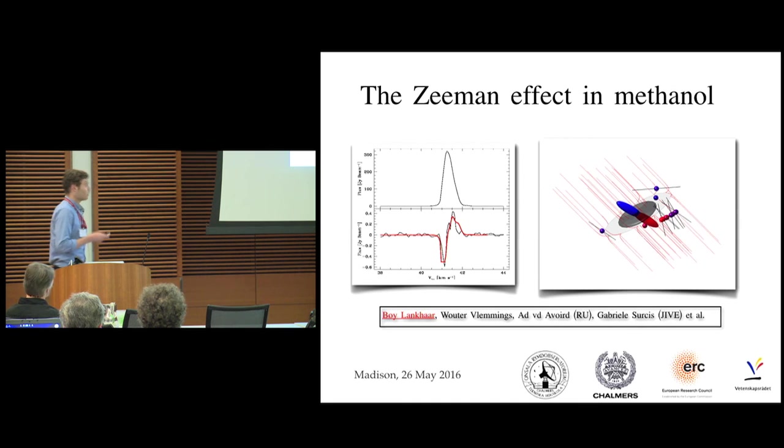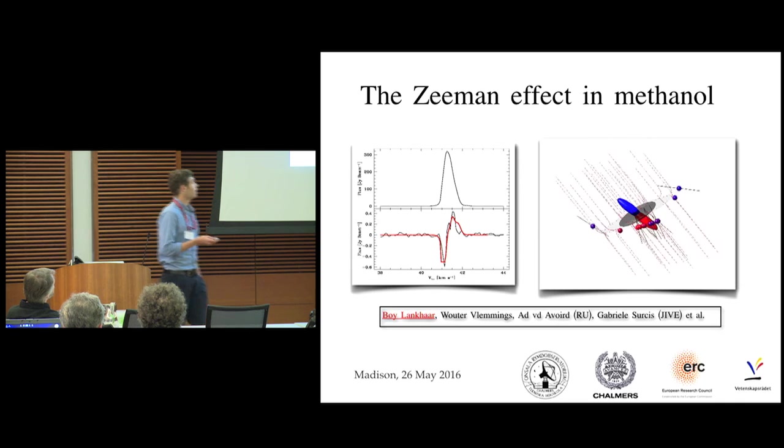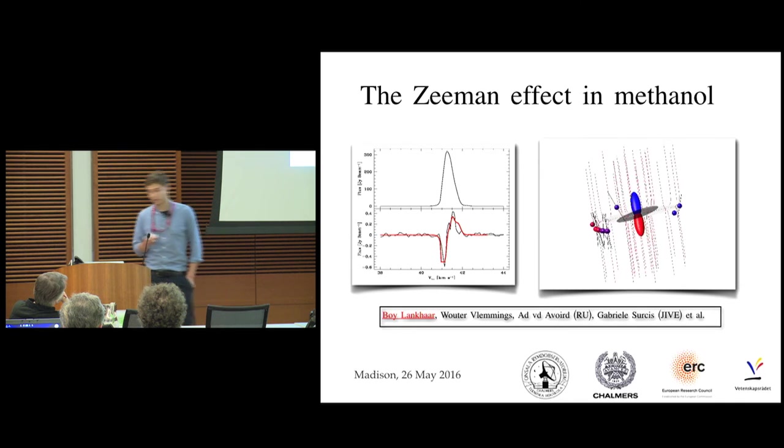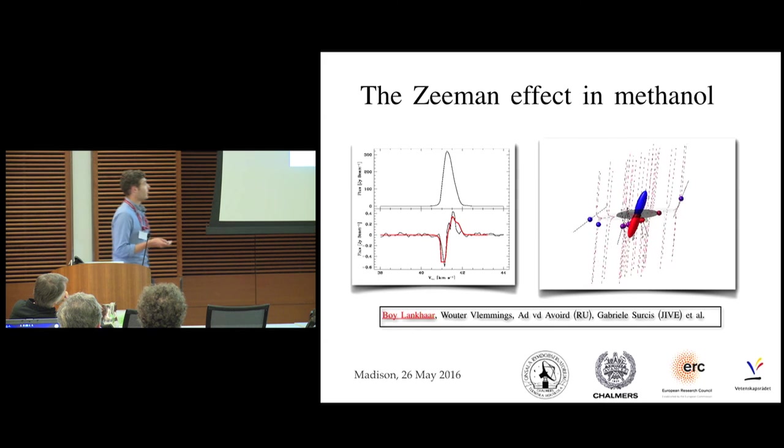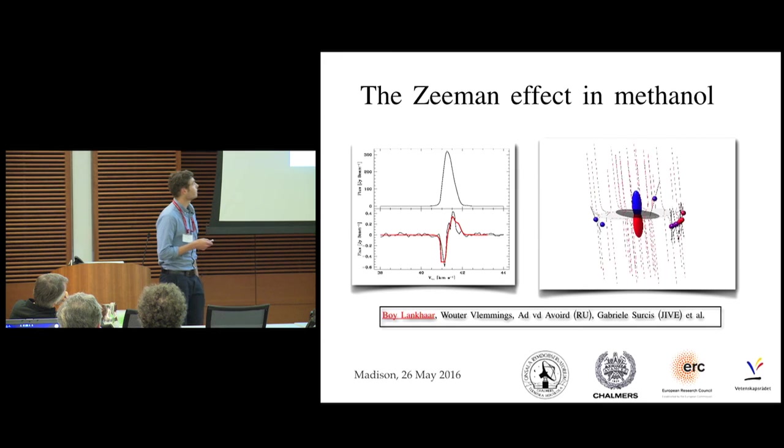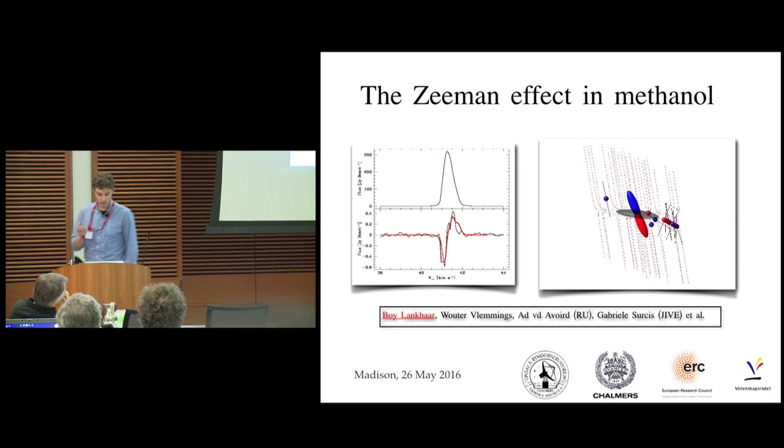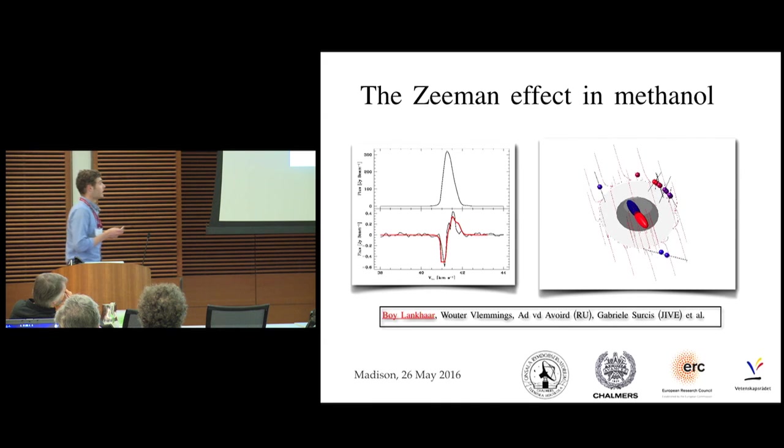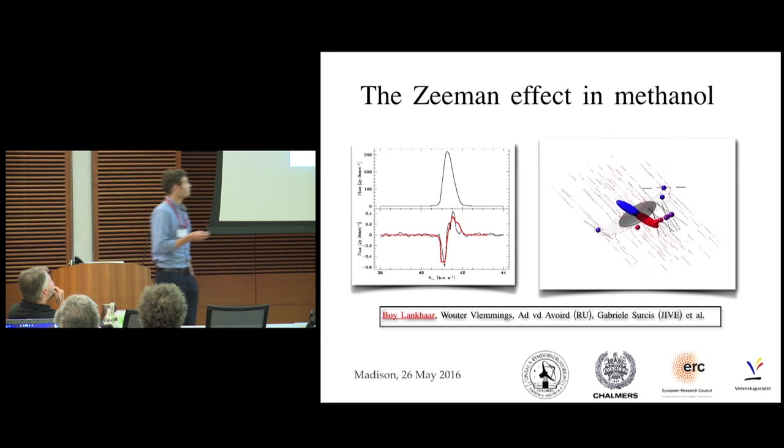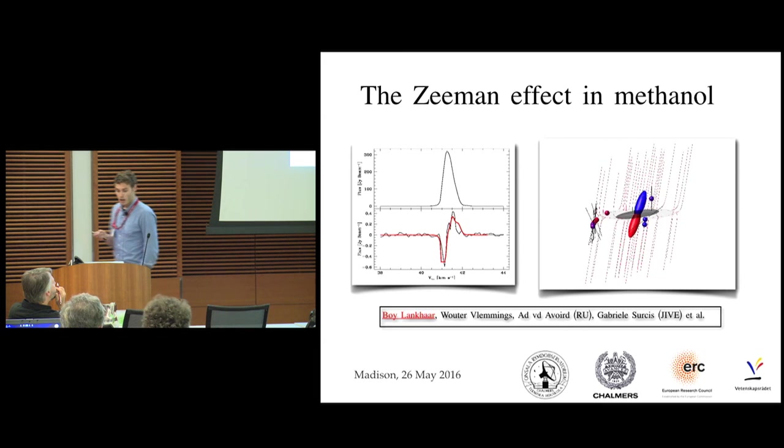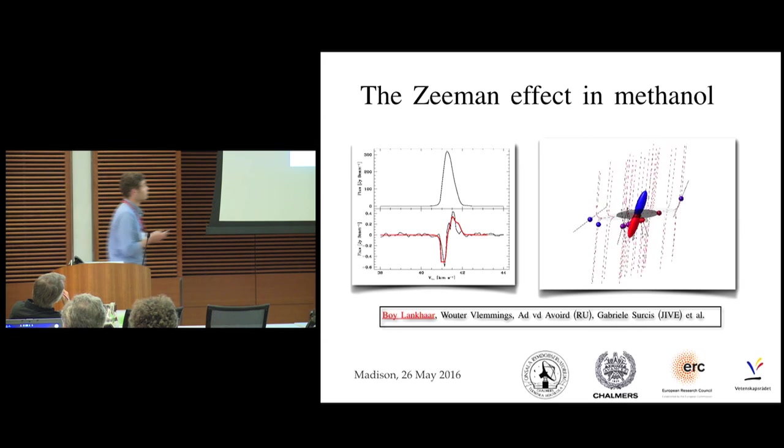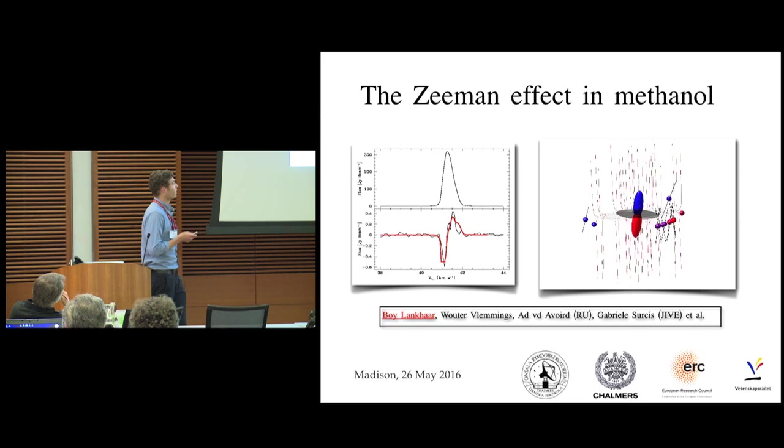Methanol is found as a maser around Protostars, and it's pretty abundant. The masers can be used for their good brightness and very narrow line width, and also good localization and abundance to map out the magnetic field around Protostars, by looking at the Stokes V spectra, and by looking at the linear polarization to determine the morphology of the magnetic field.